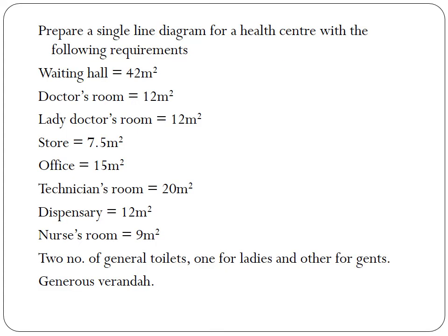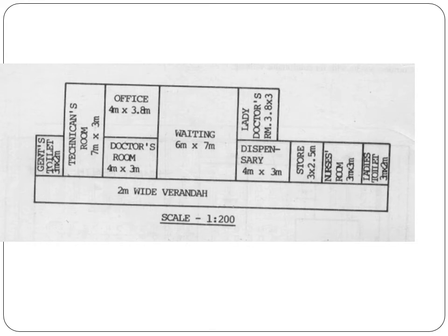Using this concept, we design a primary health center with the following requirements. The area of different rooms has been given: waiting hall is 42 square meters, doctor's room is 12 square meters, lady doctor's room is 12 square meters, store is 7.5 square meters, office is 15 square meters, technician room is 20 square meters, dispensary and nurse room are also provided. Two general toilets are required, one for ladies and one for gents. A line diagram has been plotted with a common 2-meter wide veranda showing connectivity to different rooms, with toilets at the two extreme ends.